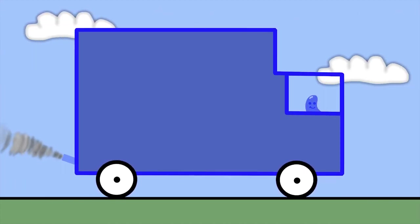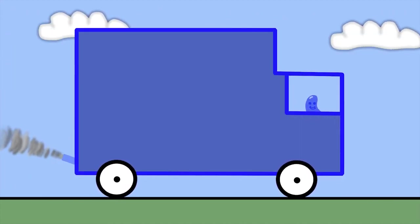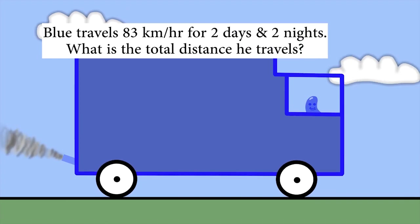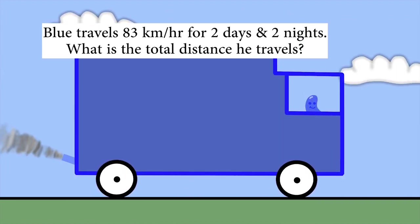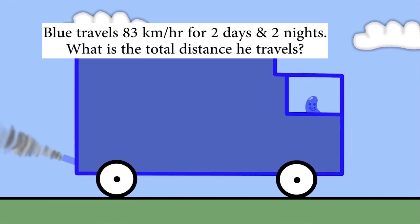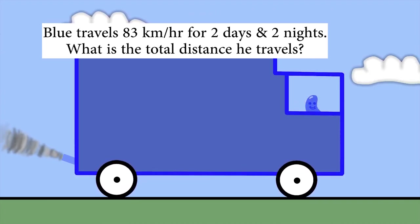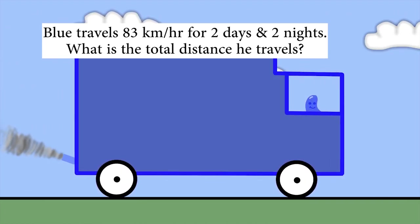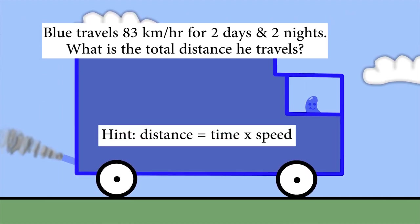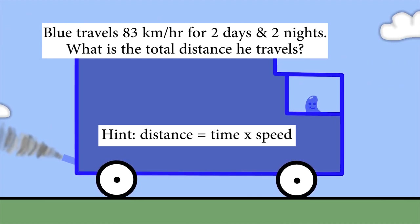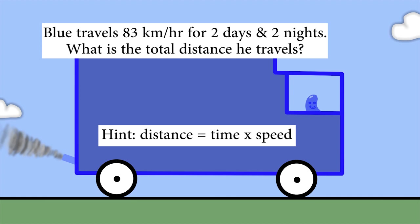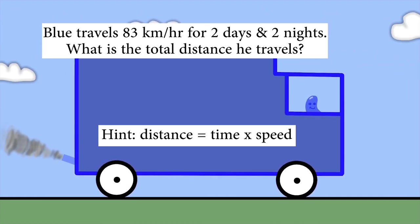I like driving my blue truck on long trips. If I travel at an average speed of 83 kilometres an hour, how far can I go in two days and two nights? You can use the formula: the distance I travel equals the length of time I spend travelling multiplied by my speed.